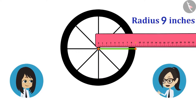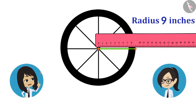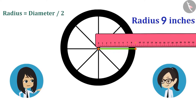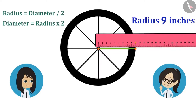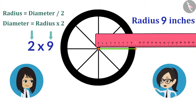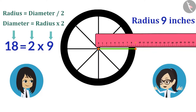Let's now measure its diameter as well. Hey, why do we need to measure it? We can find it only by measuring the radius. The radius is also called half of the diameter. This means that the diameter will be twice the radius. That means if we multiply the radius by 2, then the measure of diameter will be known. The radius is 9 inches, multiplied by 2, it will be 18 inches. This means that the diameter of the wheel of our bicycle is 18 inches.